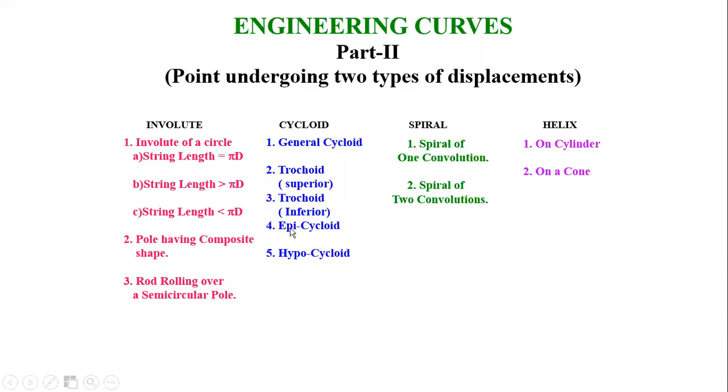The second pole having composite shapes and third one is a rod rolling over a semicircular pole. In cycloid, again, five types: the general cycloid, then superior, inferior, epicycloid, and hypocycloid. For first syllabus, general cycloid and epicycloid and hypocycloid included.